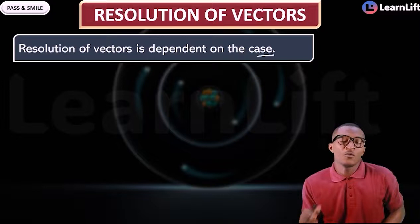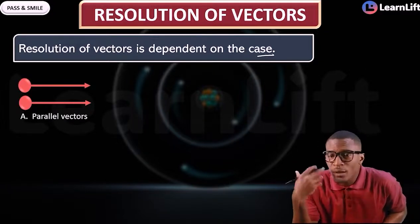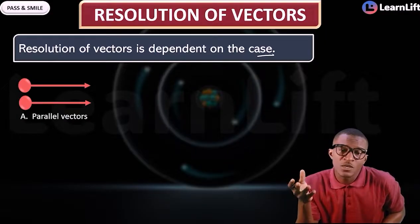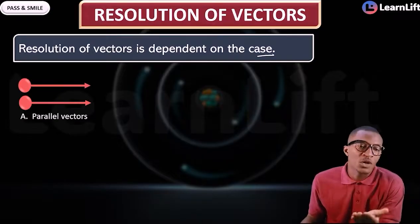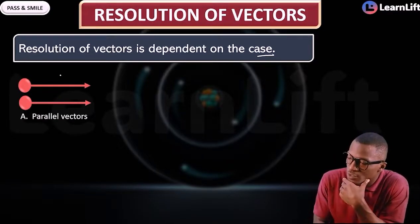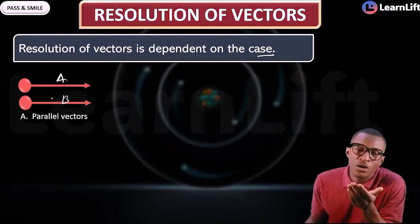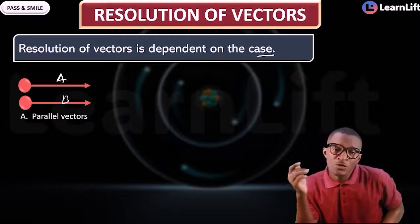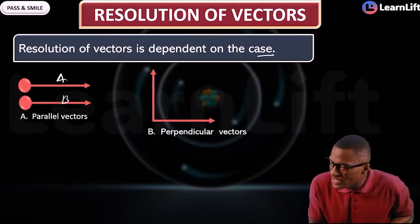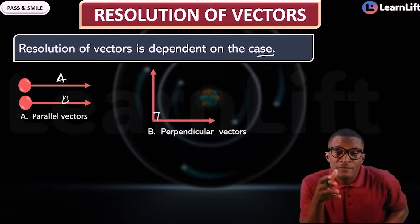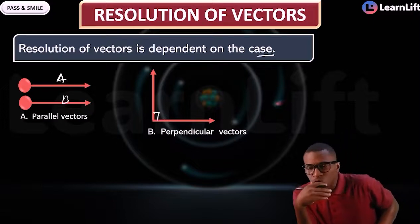What are the cases of vectors? Number one: parallel vectors. These are vectors in which there is no angle between the two vectors. If this is vector A and this is vector B, you can see that they are parallel because there is no angle between them. Number two: when the two vectors are perpendicular to each other — perpendicular means the angle between them is 90 degrees.